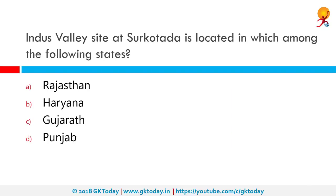The Indus Valley site at Surkotada is located in which among the following states? The correct answer is Gujarat. It is located 160 km northeast of Bhuj in the district of Kutch in Gujarat. In the Indus Valley civilization, the remains of horse bones have been found at this site.